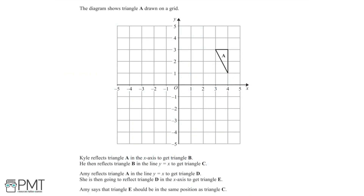In this question, we're given a diagram which shows triangle A drawn on a grid. We're told that Kyle reflects triangle A in the x-axis to get triangle B. He then reflects triangle B in the line y equals x to get triangle C. Amy then reflects triangle A in the line y equals x to get triangle D. She is then going to reflect triangle D in the x-axis to get triangle E. Amy says that triangle E should be in the same position as triangle C, and we need to prove whether or not this is correct.